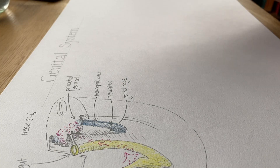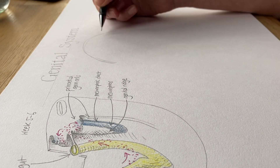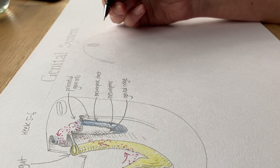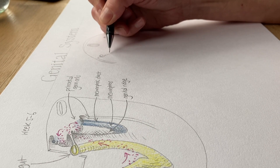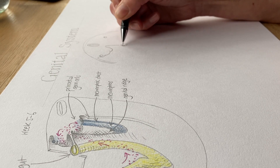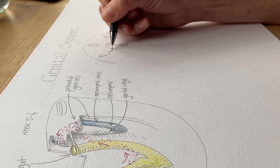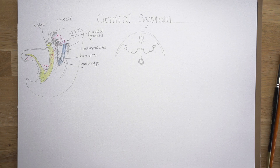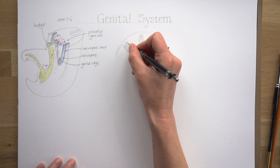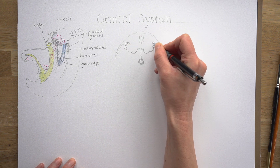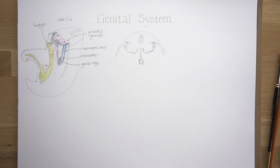Both sexes start off with a unisex kit of parts. It doesn't matter whether the embryo is male or female at this point — it has a mesonephros, a genital ridge, a mesonephric duct, and another duct as well: a paramesonephric duct.